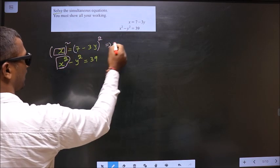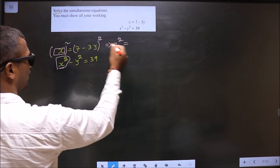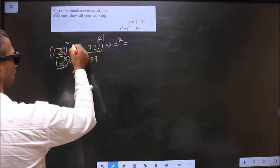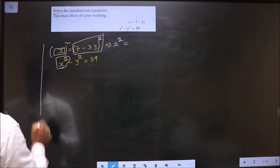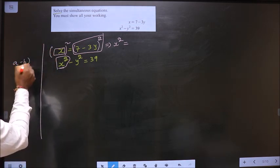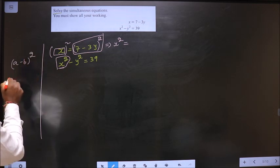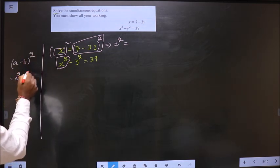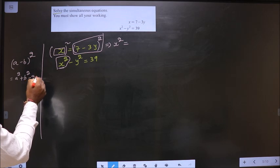Then here I get x square and this you should expand by making use of the formula a minus b whole square. That is a square plus b square minus 2ab.